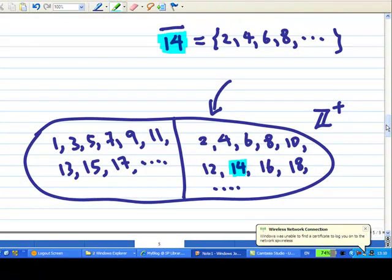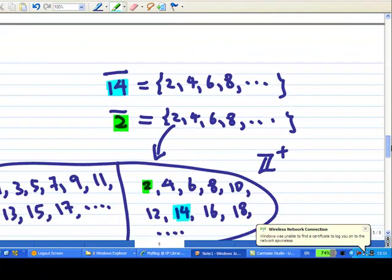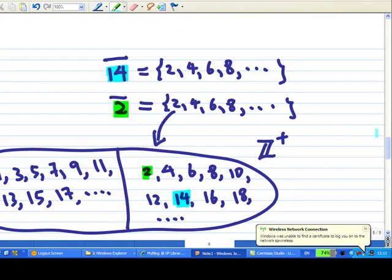Now, in this case, the naming you will find is not unique. What does it mean? It means the cell containing two, in this case we write two with a bar on top, consists of 2, 4, 6, 8, 10, 12, 14, 16 and so on. In fact, the cell containing two and the cell containing 14 are the same cell.